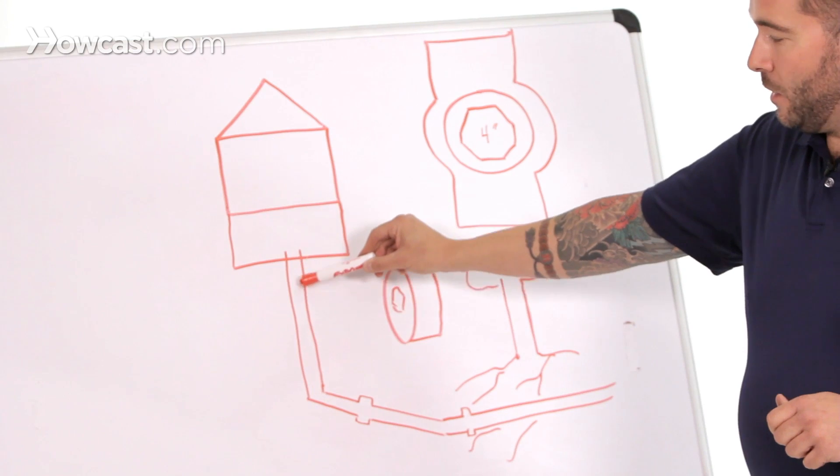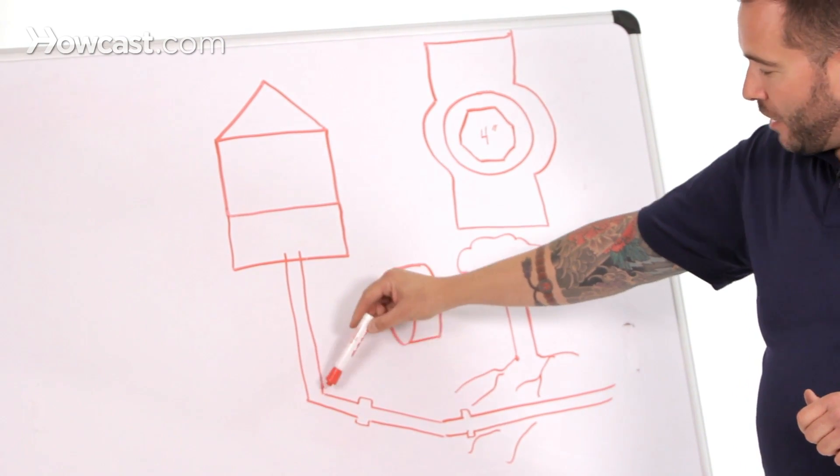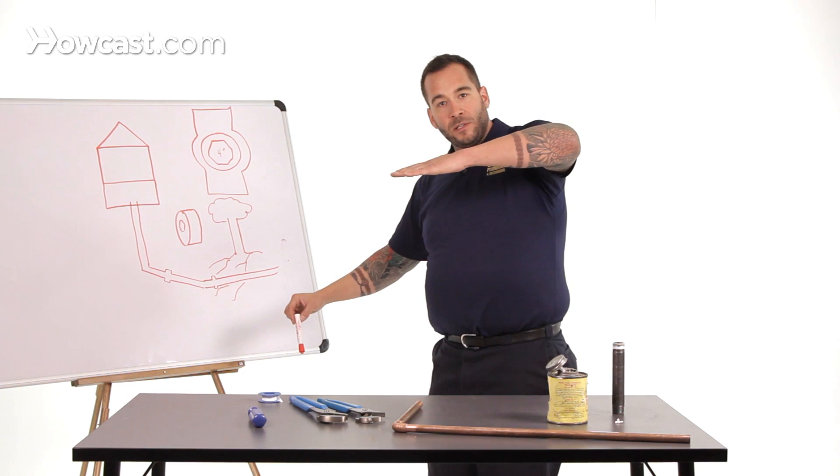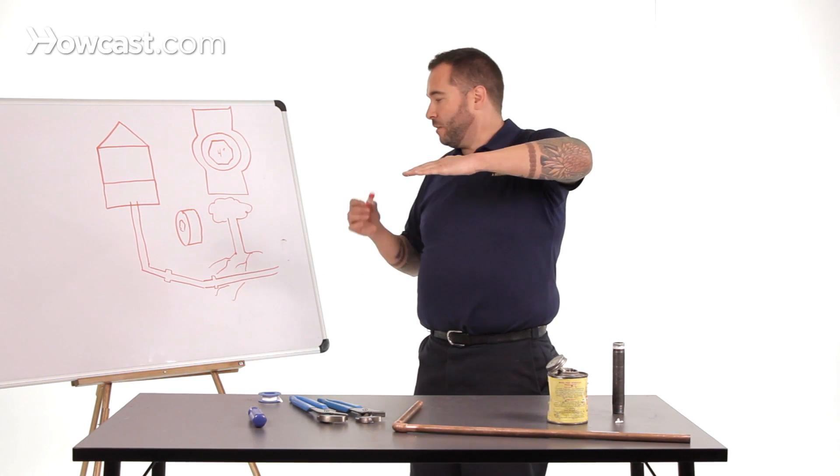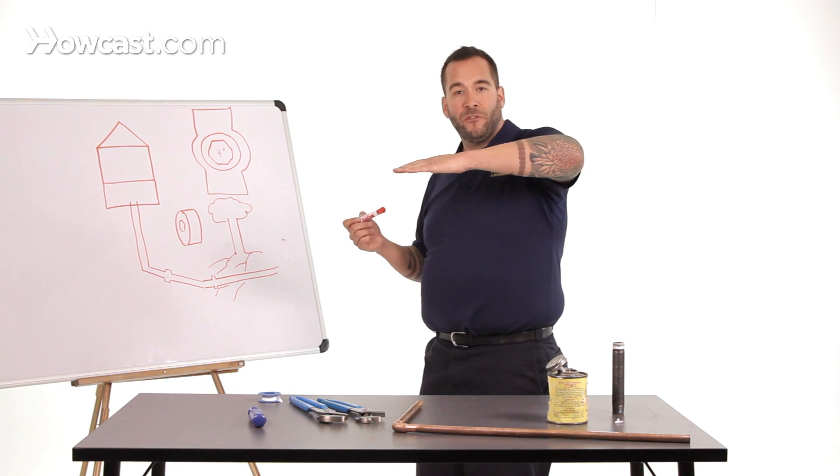The sewer line coming out of this home, running through the front yard, should angle down and continue always at a constant pitch. Normally the standard pitch is a quarter of an inch per foot.